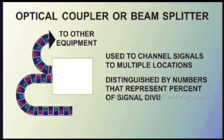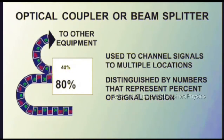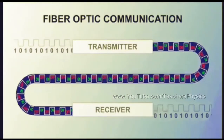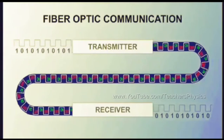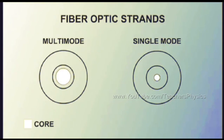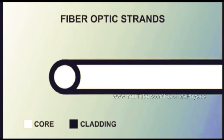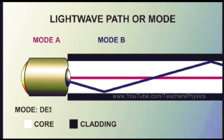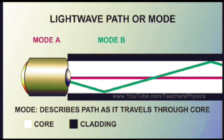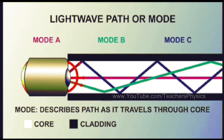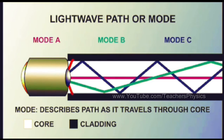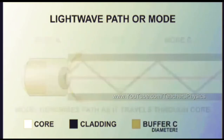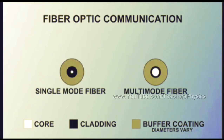Filters are distinguished by numbers that represent the percentage of signal divisions, for example 60/40 or 80/20. The cable used within the optical fiber communication system requires different types of strands depending on usage. Fiber strands differ depending on the design of the core relative to the surrounding cladding. Depending on the type of light source used, light waves propagating through the core may follow a variety of paths — a mode describes the path of a light wave as it travels through the core. There are single-mode and multimode fiber optic strands.